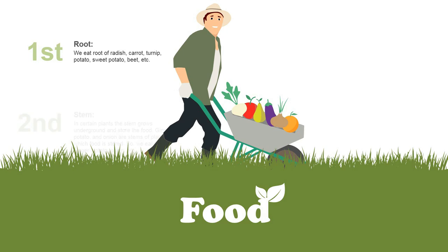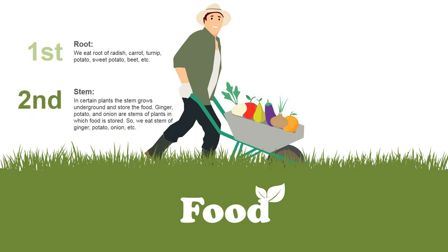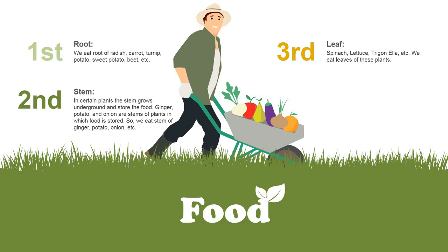Next is stem. In certain plants, the stem grows underground and stores food. Ginger, potato and onion are stems of plants in which food is stored. So we eat the stem of ginger, potato, onion, etc.